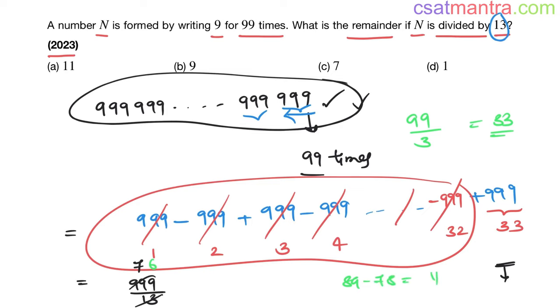See, triple nine is 13 into 76 plus 11. Triple nine you are dividing with 13, 76 is the quotient, 11 is the remainder. So for this result we are getting 11 as the remainder.